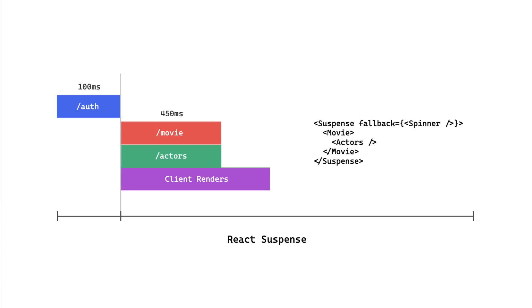This will also help prevent some race conditions. Server components are also compatible with concurrent mode, which will allow us to render components as their data streams in rather than waiting for the entire response to finish. The short summary of concurrent mode is that it allows React to make multiple state updates at one time, which in practice leads to better performance.